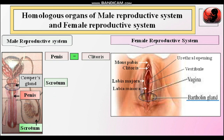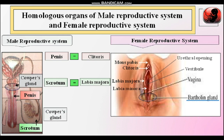The scrotum is a pouch in which the testes are present. We already studied in the male reproductive system that the function of the scrotum is to keep the temperature 2 to 3 degrees centigrade lower than the normal body temperature, which is helpful for the formation of sperms. This scrotum is homologous to the labia majora. The labia majora are the outer fleshy folds which protect the other external genital organs — both are homologous organs.